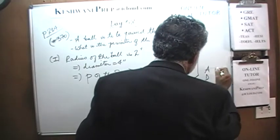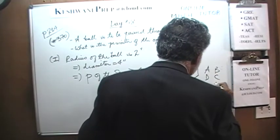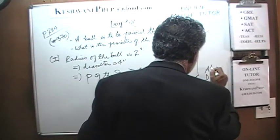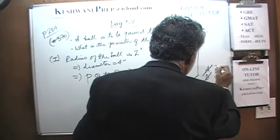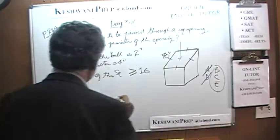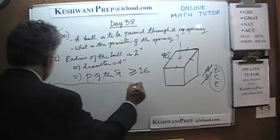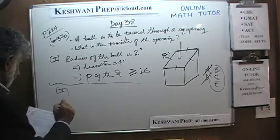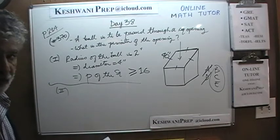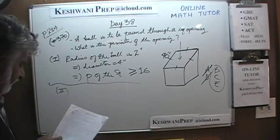A, D, B, C, E. The answer cannot be A or D. It will have to be either B, C, or E. Let's see what they tell us in the second statement.